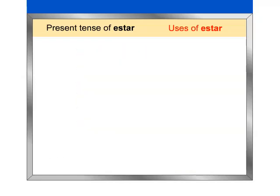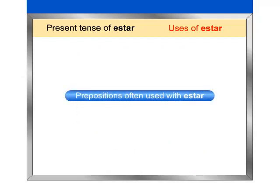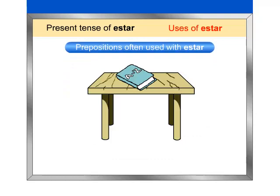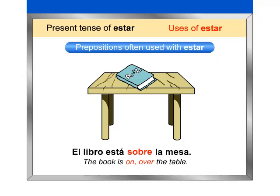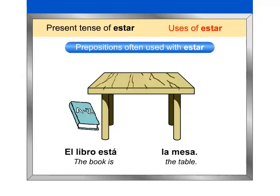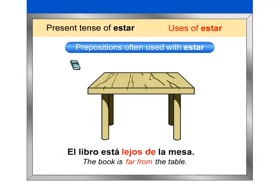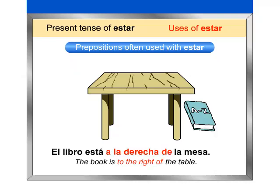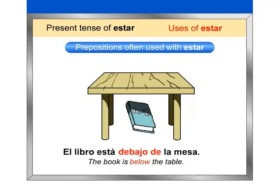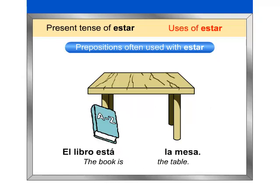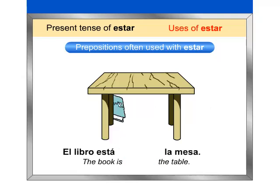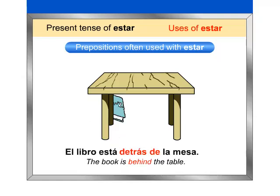Now listen carefully. Estar is used with some prepositions to describe the location of a person or an object. Pay attention to the location of the book and repeat the prepositions after me. El libro está sobre la mesa. El libro está al lado de la mesa. El libro está lejos de la mesa. El libro está a la derecha de la mesa. El libro está debajo de la mesa. El libro está delante de la mesa. El libro está detrás de la mesa. Remember, these are just a few examples of prepositions of location.